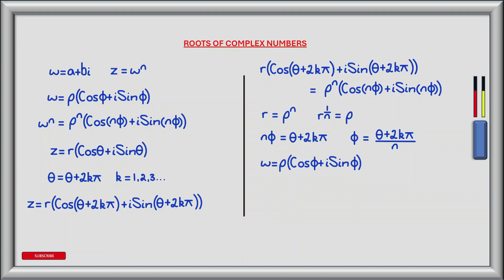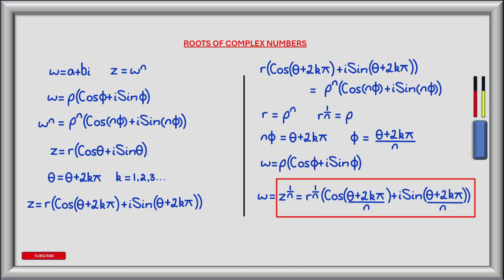We know that w equals rho times the bracket of cos phi plus i sine phi. Substituting for rho and phi, we have w — which is also the nth root of z, or z to the power of 1 over n — equals r to the power of 1 over n times the bracket of cos((theta + 2k pi)/n) plus i sine((theta + 2k pi)/n). By substituting different integer values for k, specifically k equals 0 to n minus 1, we obtain the distinct roots of our complex number w, which are the solutions when w raised to the power of n equals a plus bi. By understanding and applying De Moivre's theorem we can systematically find all n roots of any complex number.